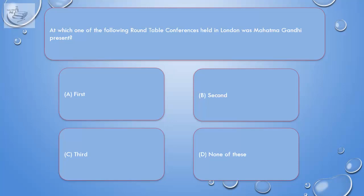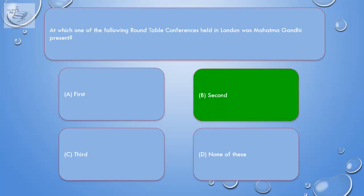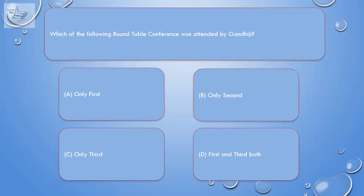Question: At which one of the following Round Table Conferences held in London was Mahatma Gandhi present? A. First, B. Second, C. Third, D. None of these. Correct answer is B. Second.